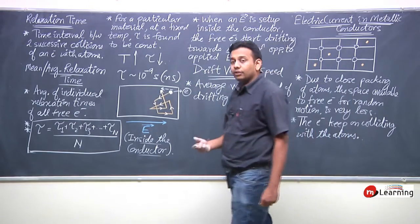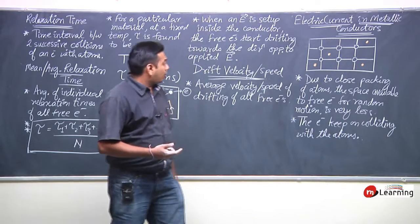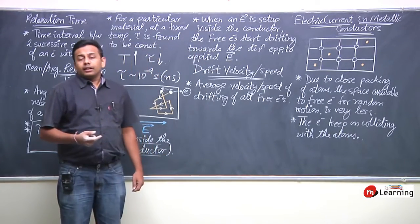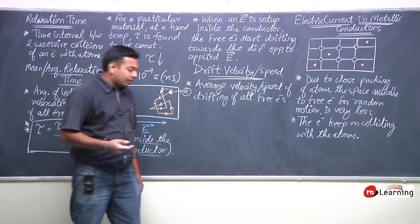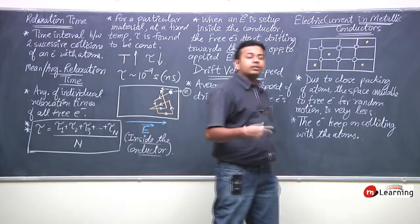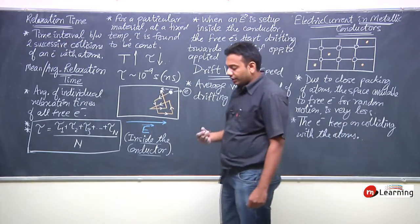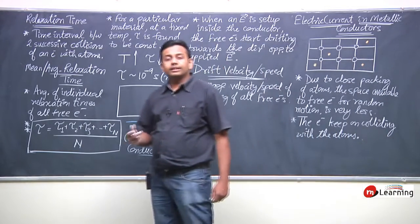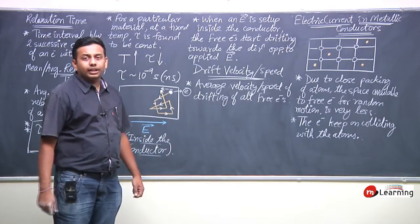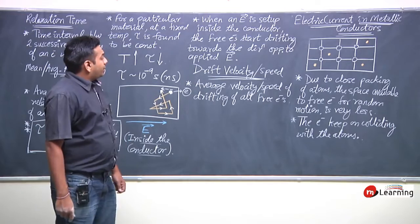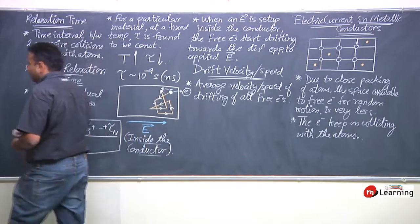We want to compute this drift velocity — what is the value of drift velocity, what factors does it depend on, and how does this drift velocity contribute to electric current? How is drift velocity related to electric current? We will now derive this drift velocity.